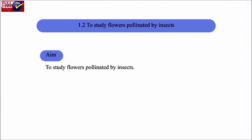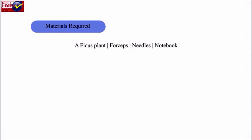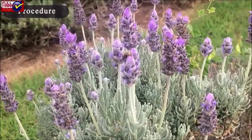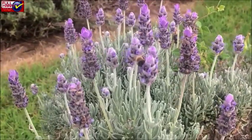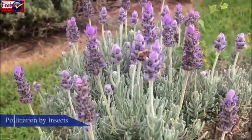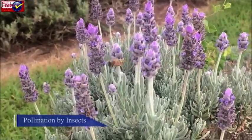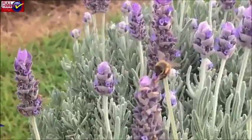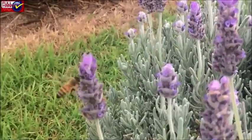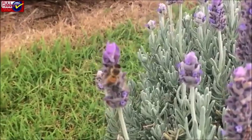Section 1.2: To study flowers pollinated by insects. Materials required: A Ficus plant, forceps, needles, a notebook. Procedure: Flowers adapted to pollination by insects are also known as entomophilous flowers, where 'entomon' means an insect. Study the various parts of the flower and observe the insects which visit these flowers.